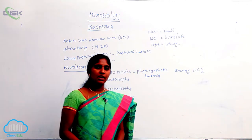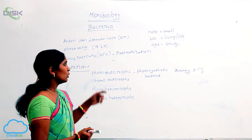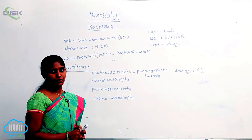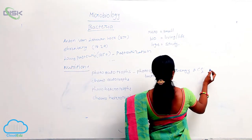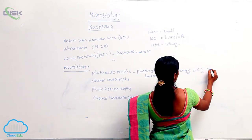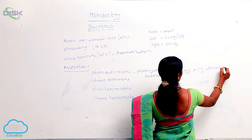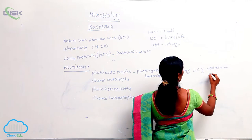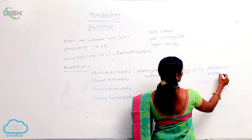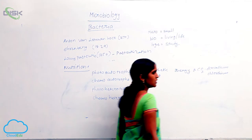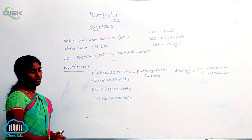Atmospheric carbon dioxide is the carbon source for the photoautotrophs. Examples of photoautotrophs are Chromatium and Chlorobium. These two are the best examples of photoautotrophs.